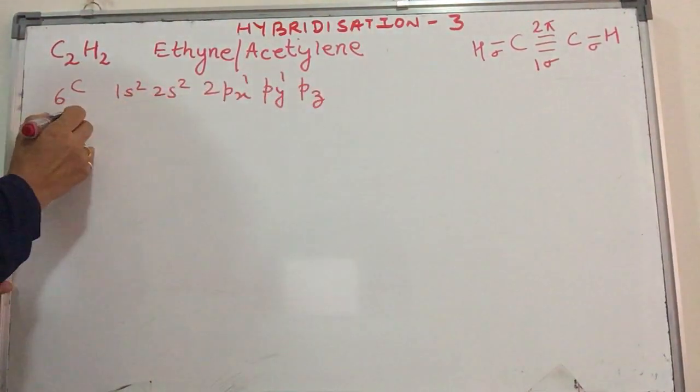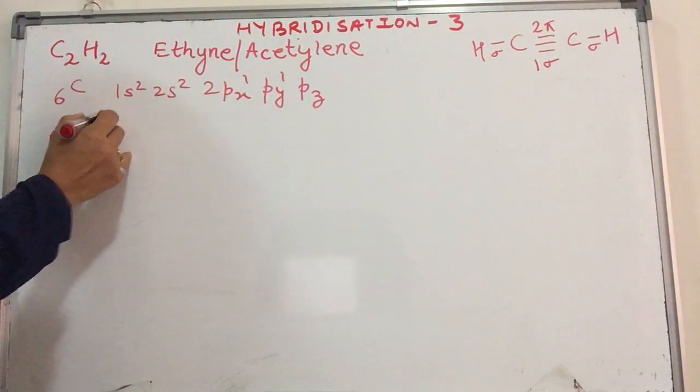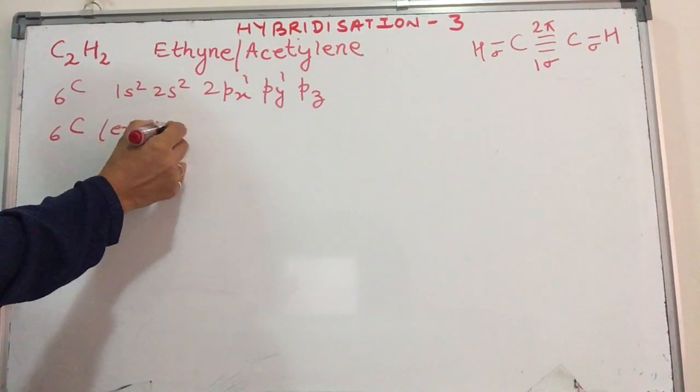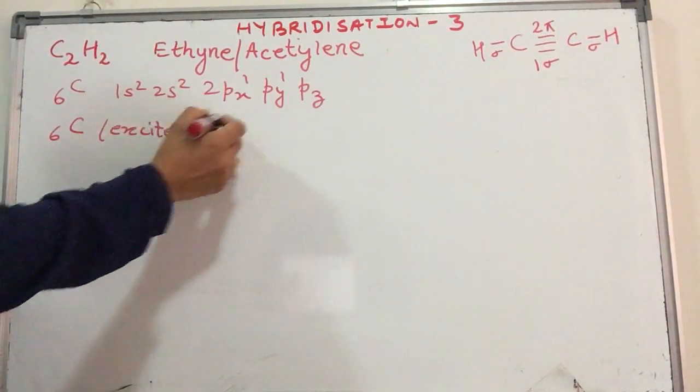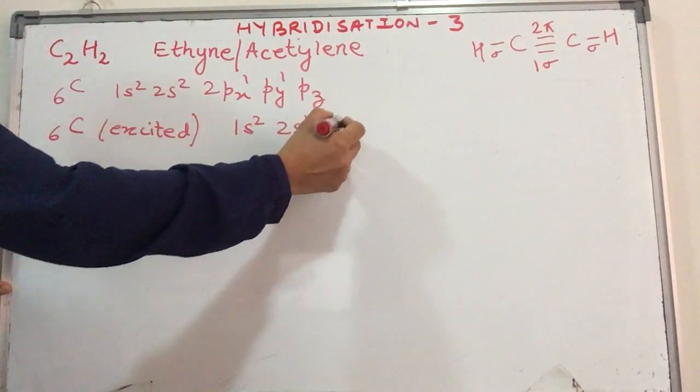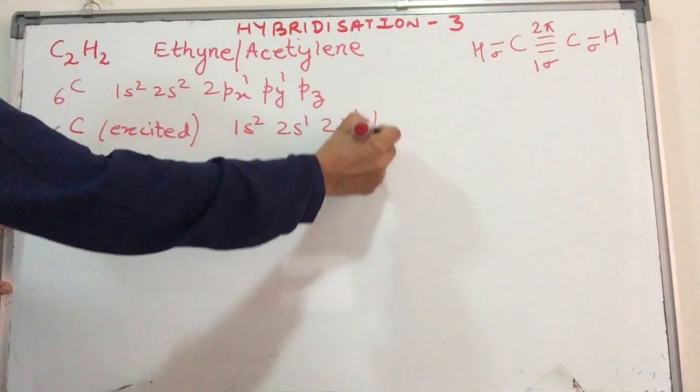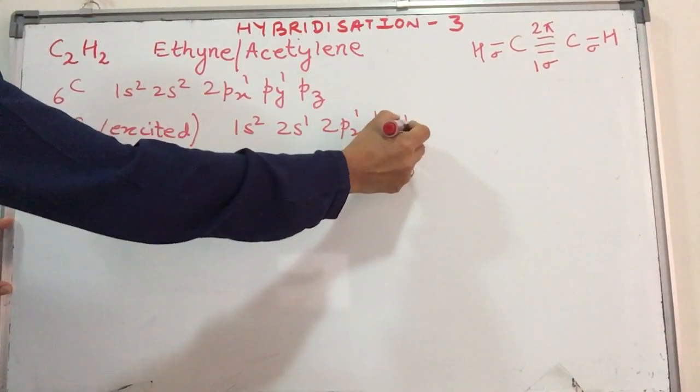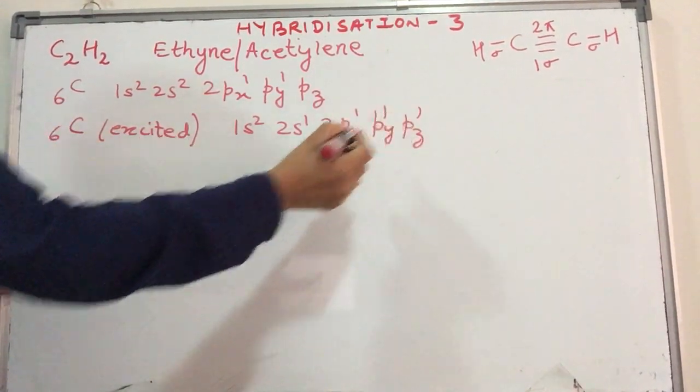On the approach of the hydrogen atom, carbon gets excited, and of course the approach of the second carbon atom as well. The electronic configuration becomes 1s2, 2s1, 2px1, 2py1, 2pz1. Now there are 4 unpaired electrons. In other words, it needs to form 4 bonds, but there is only 1 hydrogen available to each of the carbon atoms.